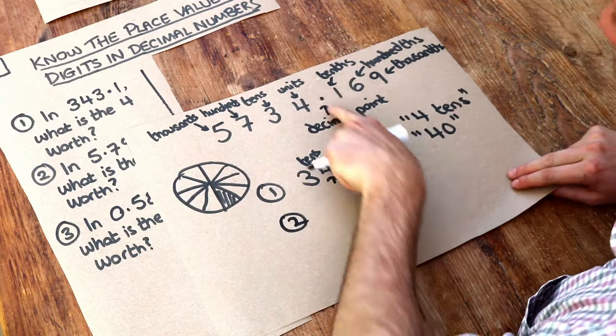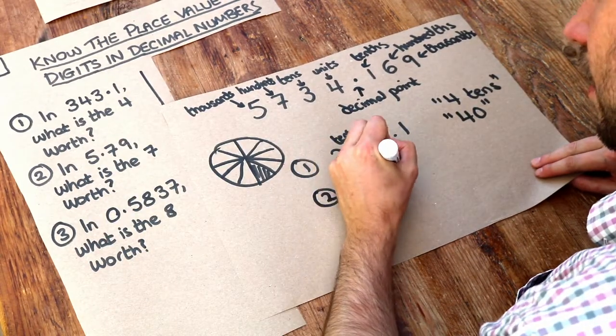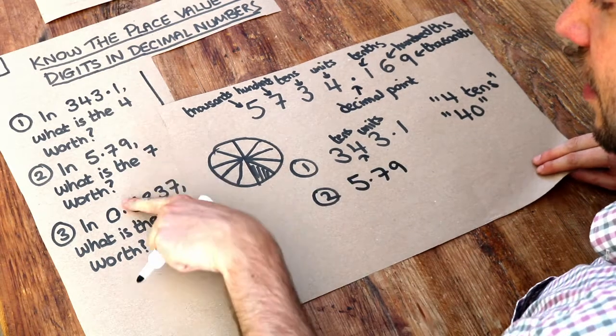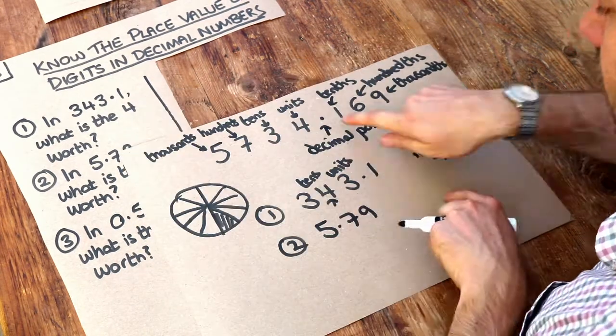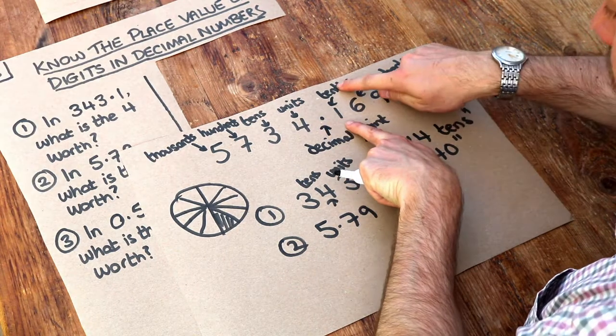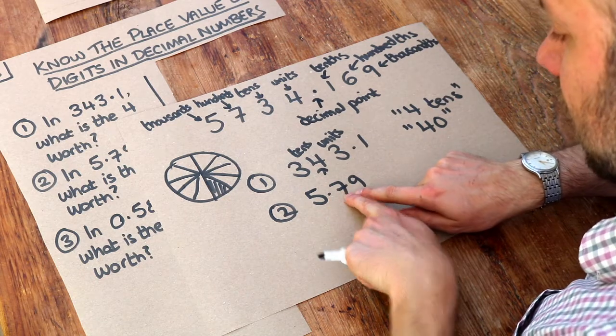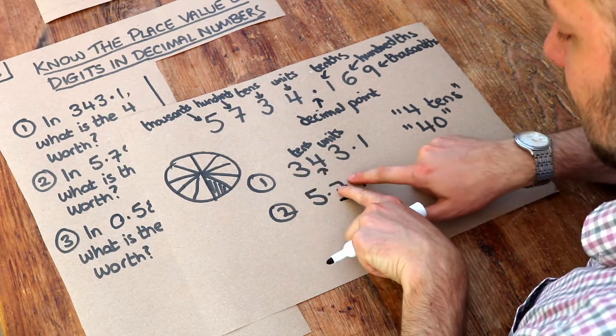What about the second one? This is where we have to go after the decimal point. In 5.79, what is the seven worth? We can see from this example that just right of the decimal point is where we have the tenths digit.